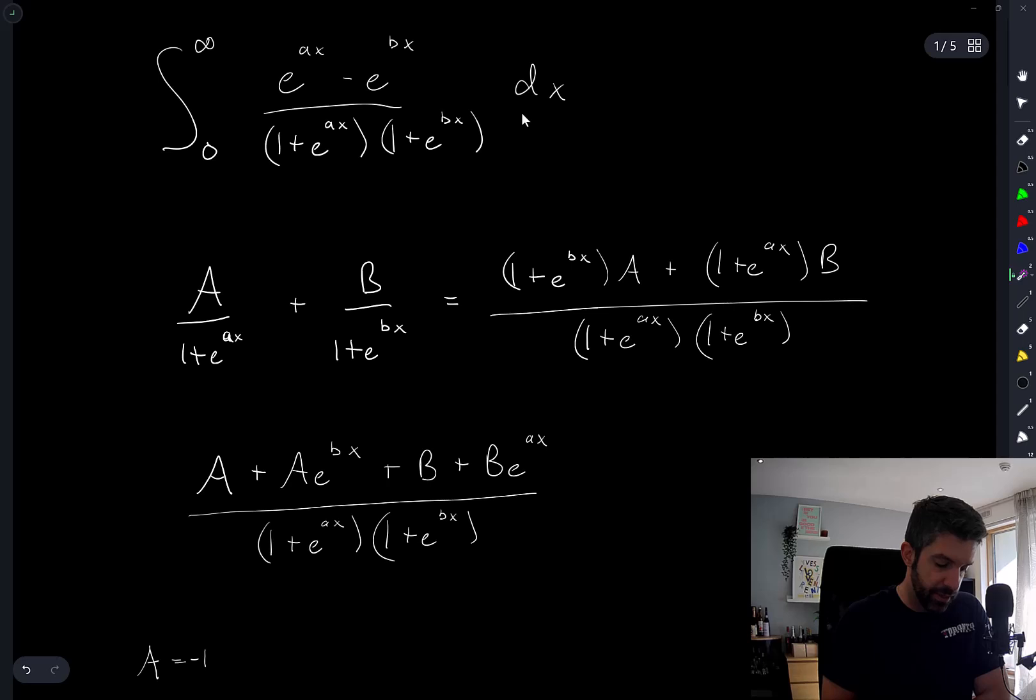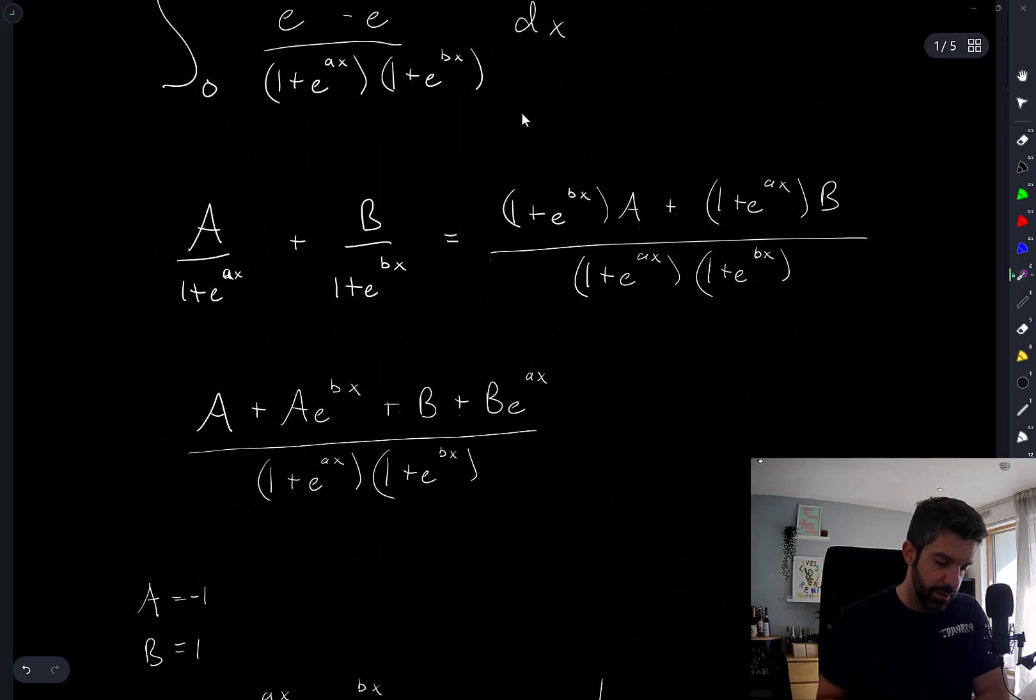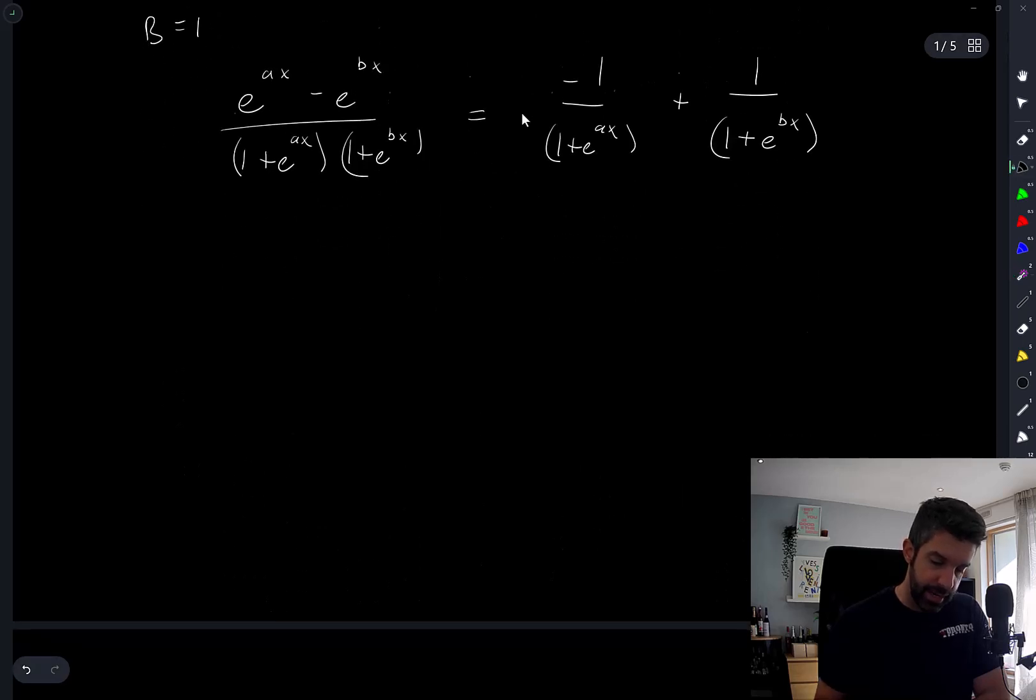I may not have been able to find constants a and b such that we have equality here, in which case I would have tried maybe factoring out a power, e to the ax, from the numerator denominator, something like that. I don't know.